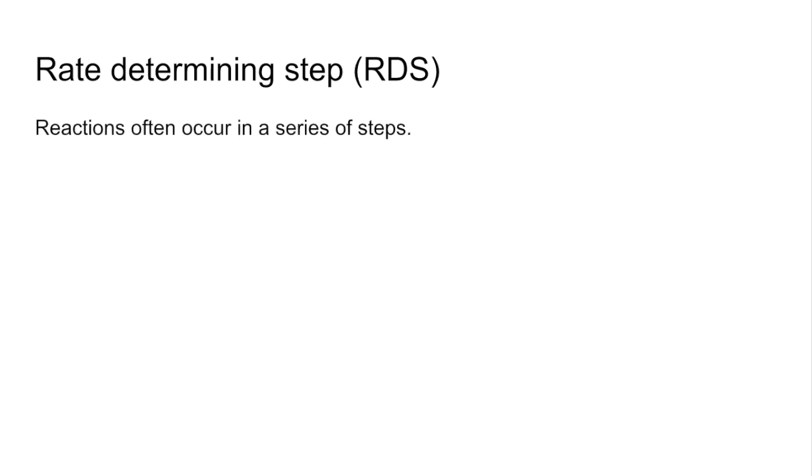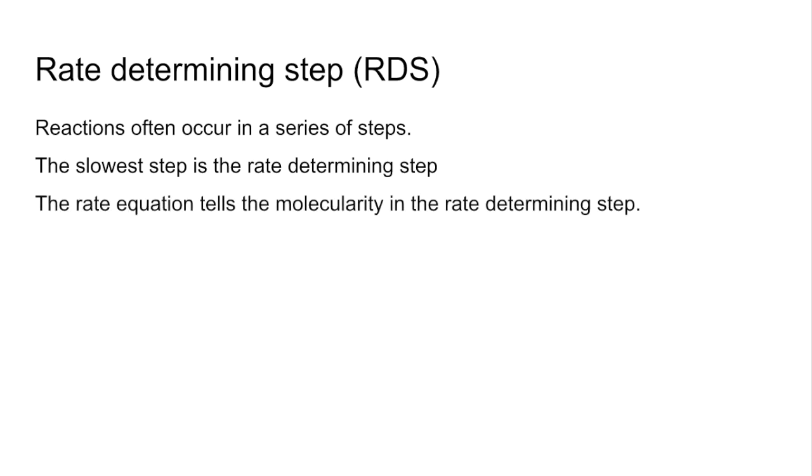Reactions often occur in a series of steps. If you think about a reaction mechanism, there's various steps. The slowest step in the mechanism is what we call the rate determining step. And the rate equation tells us the molecularity, and that just means the number of particles involved in the rate determining step.